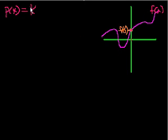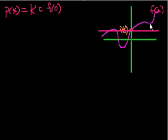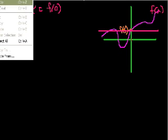So if I just wanted this one-term polynomial, what would be my best approximation for this function, at least at this point? I could just set p of x equal to f of 0, and in that case p of x would just look like a horizontal line going through f of 0. You could say that's a very rough approximation of f of x.